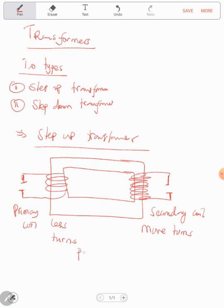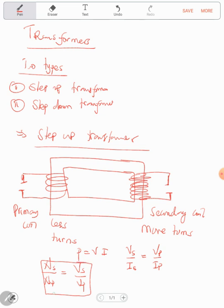Remember the equation that connects voltage and current. Power is equal to voltage times current. Power in the primary coil and power in the secondary coil are linked. This also gives us the formula: the number of turns in the secondary over the number of turns in the primary coil is equal to the voltage in the secondary over the voltage in the primary — both in terms of number of turns and in terms of voltage.